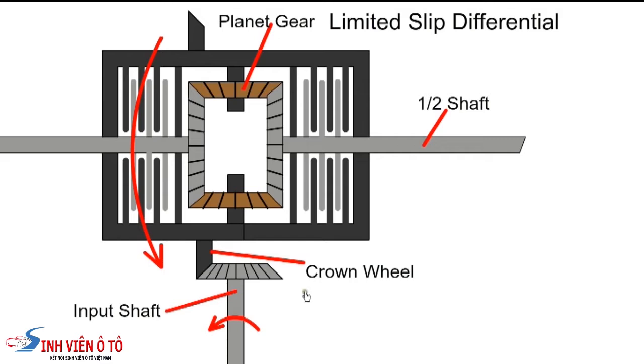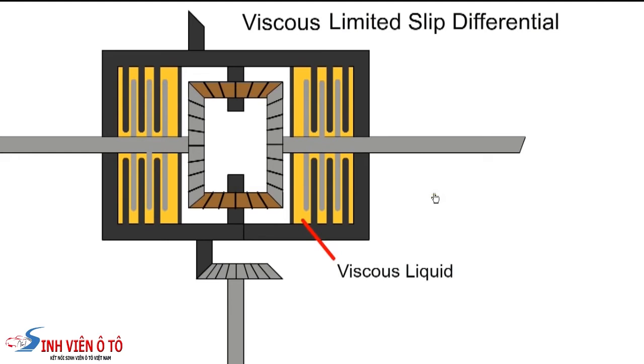With a viscous type LSD, the input pinion drives the crown gear and cage. The cage rotates and drives the sun gears with the planet gears. The cage has a set of plates fixed to it, and the half shaft has another set of plates. The sealed chamber around the plates is filled with a thick, viscous liquid.